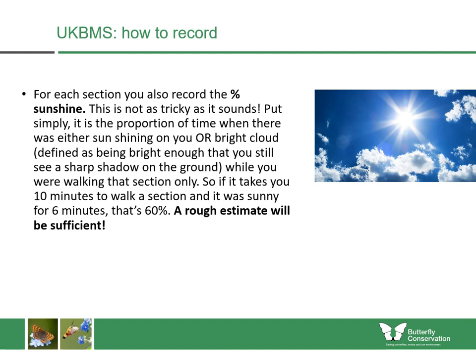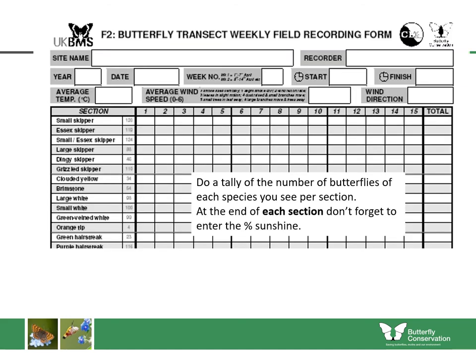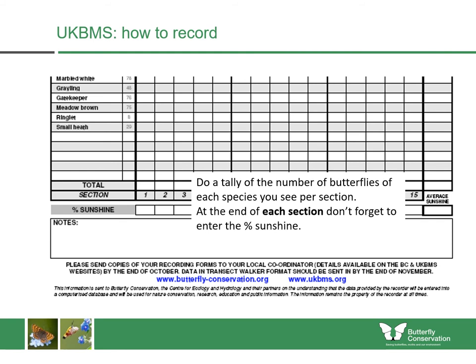For each section, you also need to record the percentage of sunshine — this is the proportion of time when there was either sun or bright cloud shining on you while walking that section only. If it takes ten minutes to walk a section and it was sunny for six minutes, that's 60%. A rough estimate is sufficient. It's not about the percentage of cloud in the sky — it's about the time when sun or bright cloud was on you during that section. This is recorded at the bottom of each section on your form.